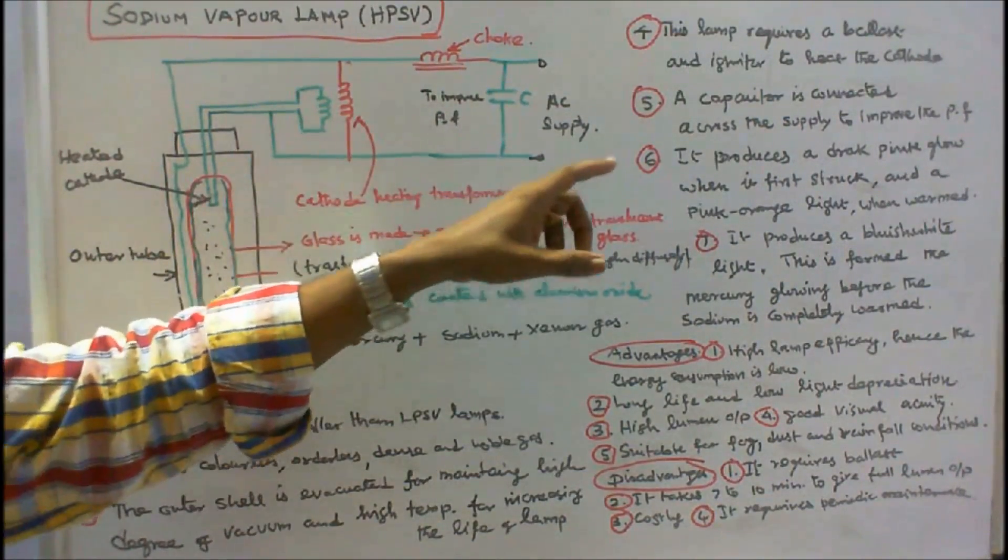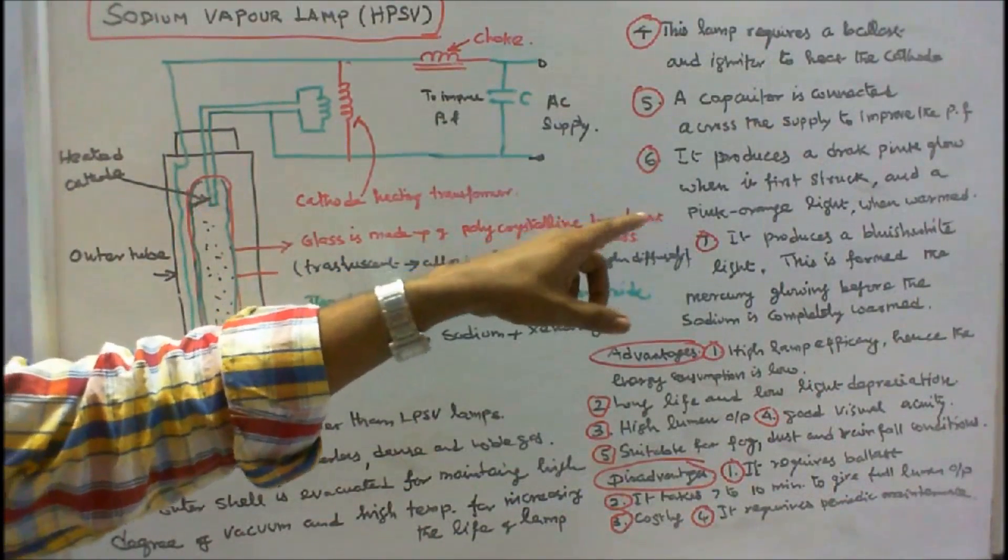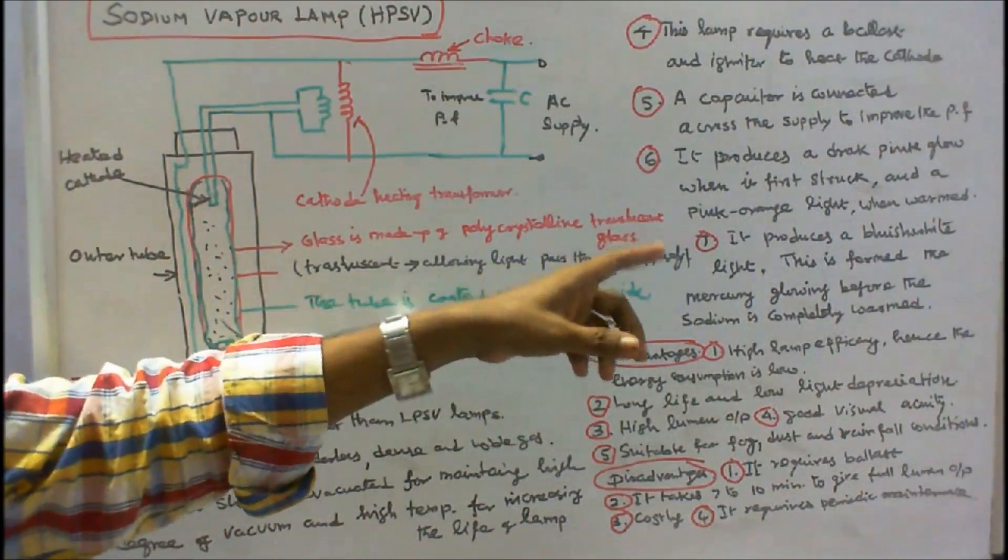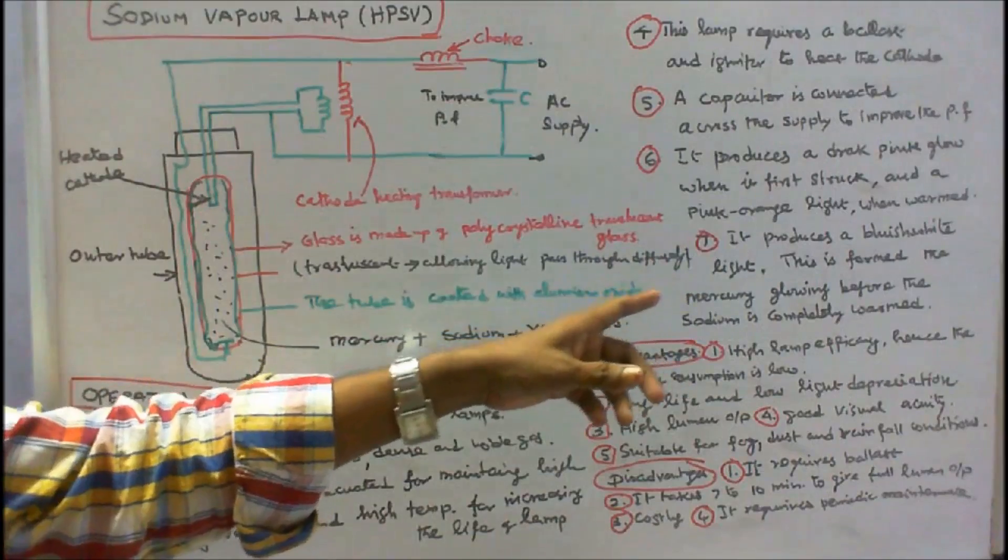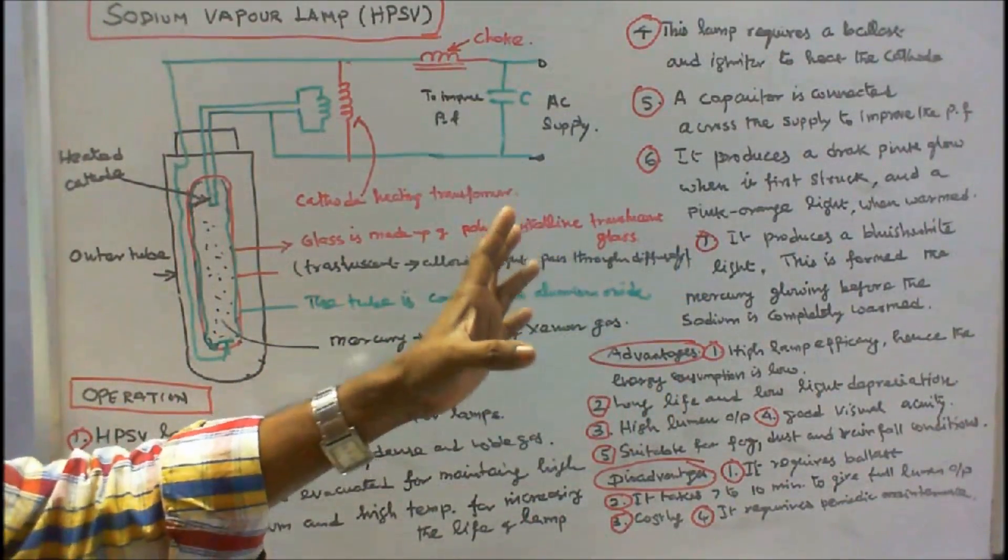It produces dark pink glow when first started and a pink orange light when warmed. It produces a bluish white light. This is formed by the mercury glowing before the sodium is completely warmed.